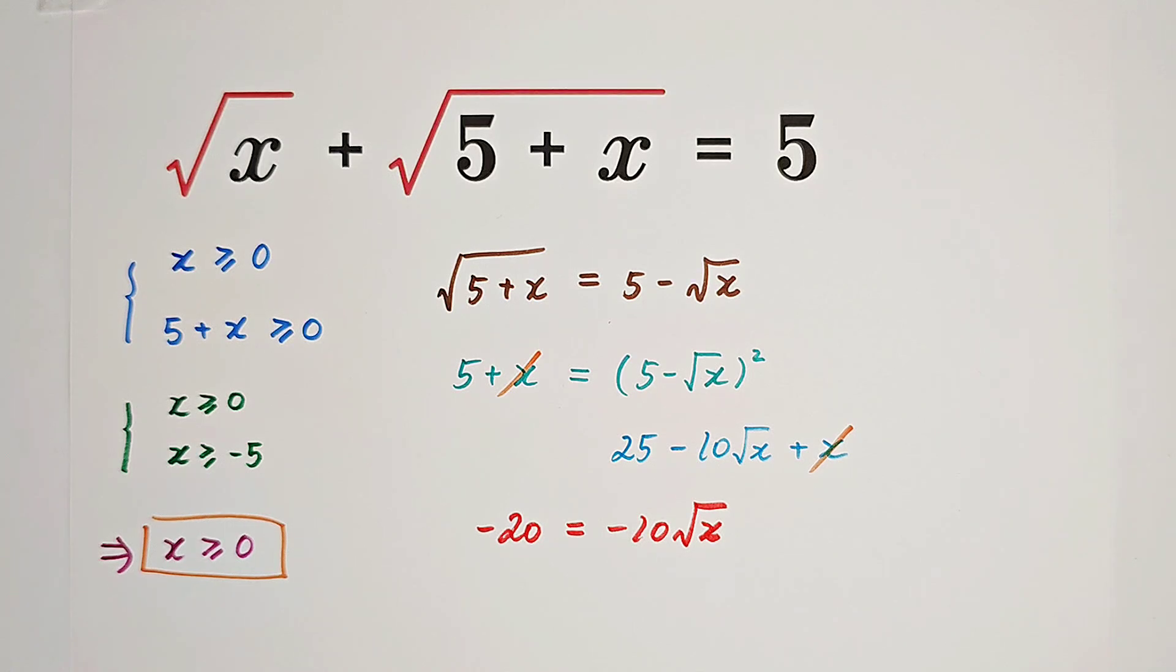Divide both sides by negative 10. Then we get 2 equals square root of x. Since x is non-negative, the square root of which number is 2? Of course, x equals 4.